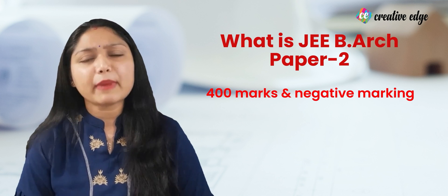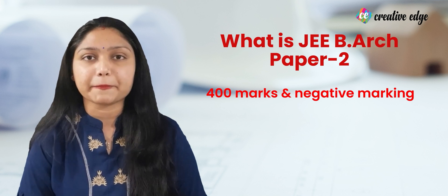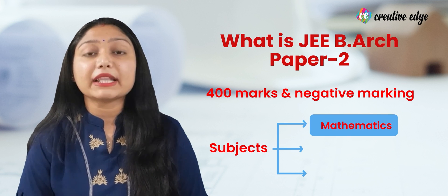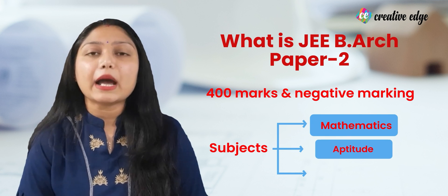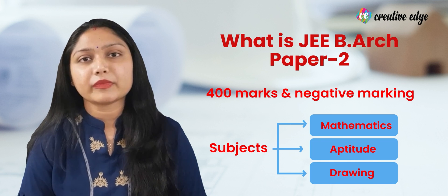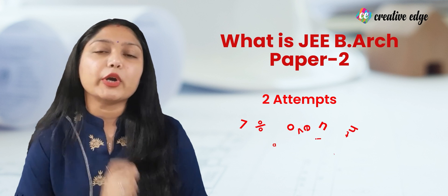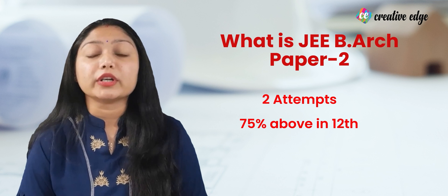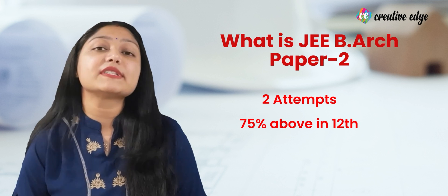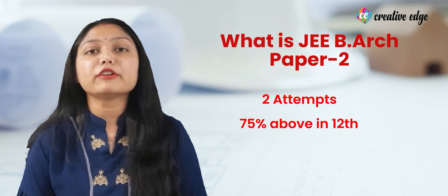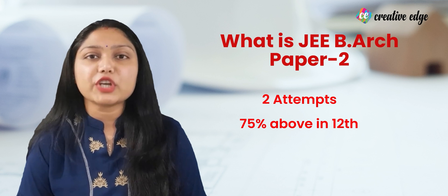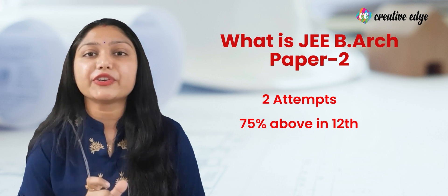JEE B.Arch Paper 2 is 400 marks with negative marking. The subjects comprising are Mathematics, Aptitude, and Drawing. For JEE B.Arch you have got 2 attempts, and the best of the attempts will take you to the next level of counselling. Key point: you need to score above 75% in your 12th to appear for the counselling of JEE B.Arch.